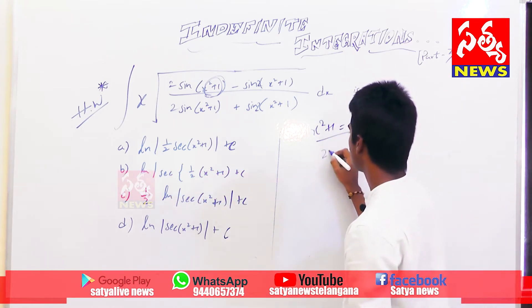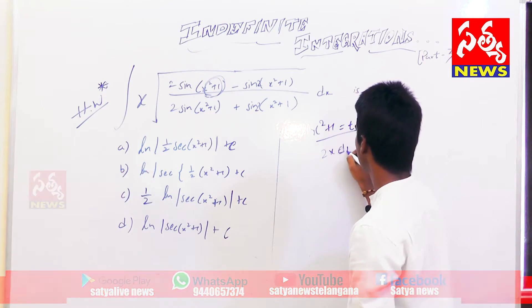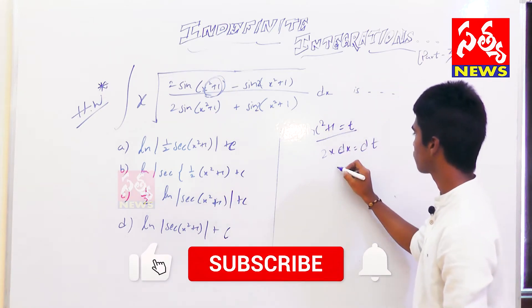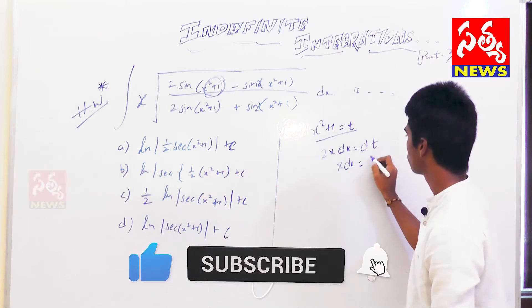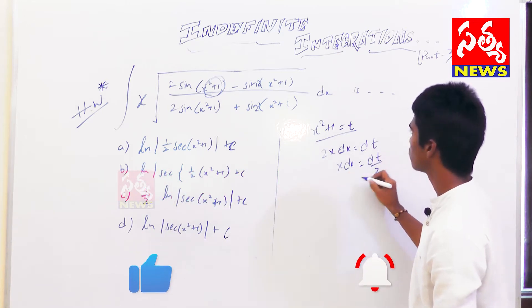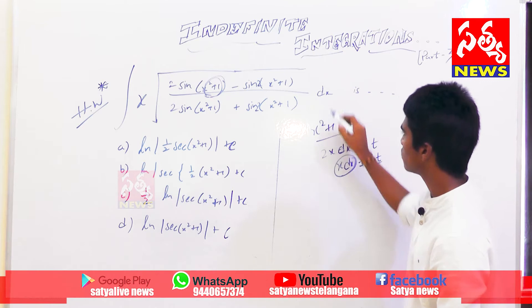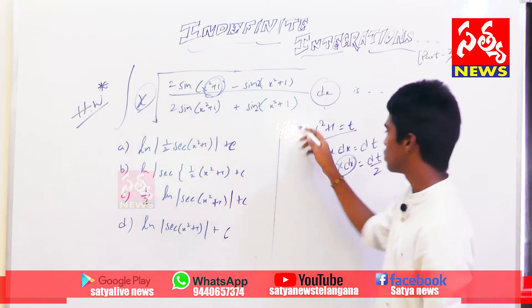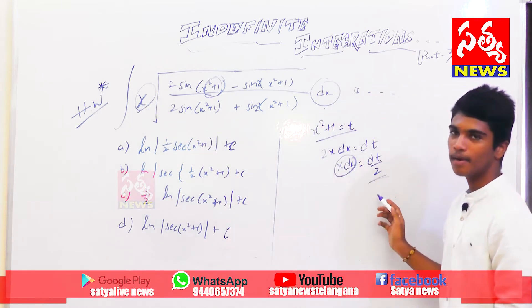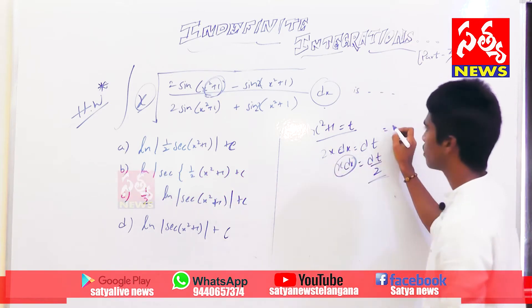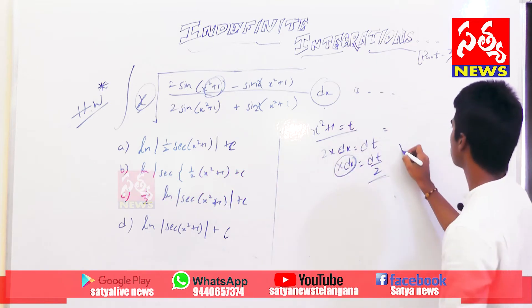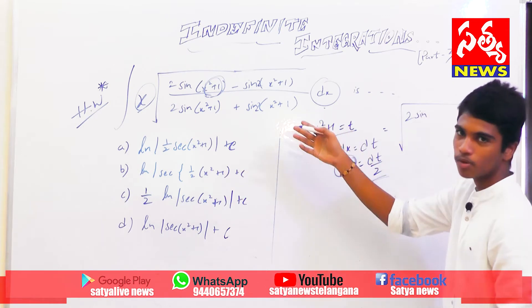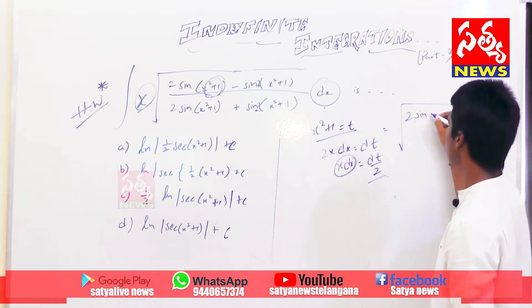By differentiating both sides, we get the expression we have in the question. See dx and x — so in place of that, we should write dt by 2. So the question becomes 2 sine, and as x squared plus 1 is t, I am substituting it.